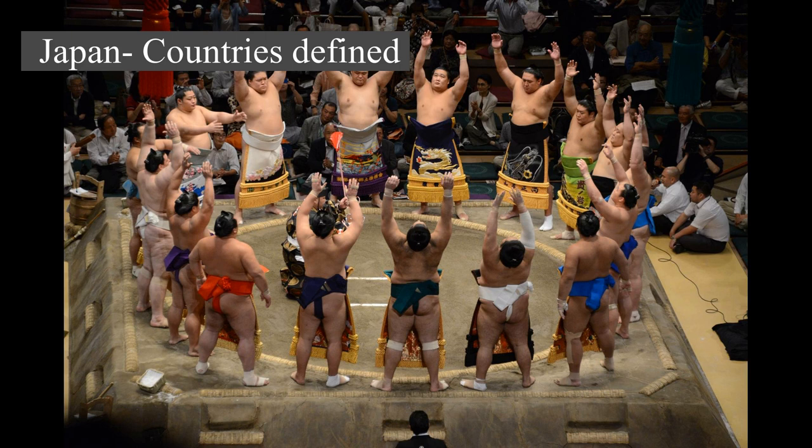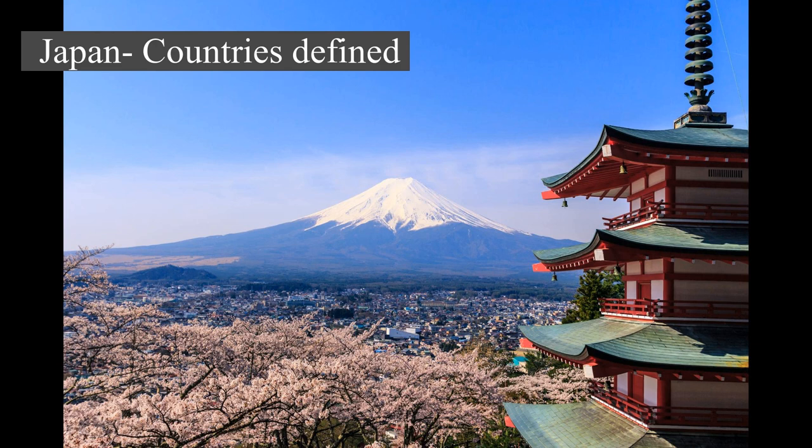Japan is a part of the Ring of Fire and spans an archipelago of 6,852 islands covering 377,975 square kilometers (145,937 sq mi). The five main islands are Hokkaido, Honshu (the mainland), Shikoku, Kyushu, and Okinawa.